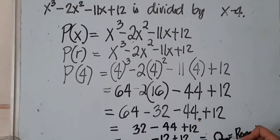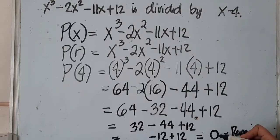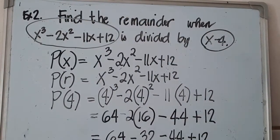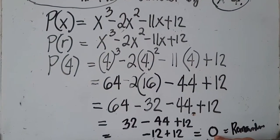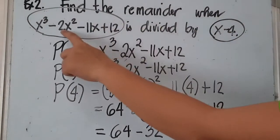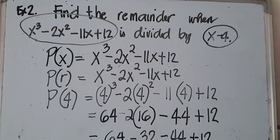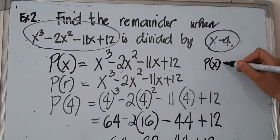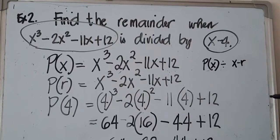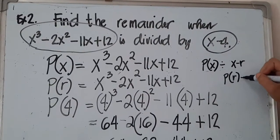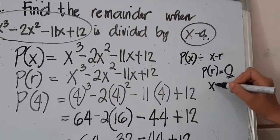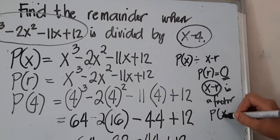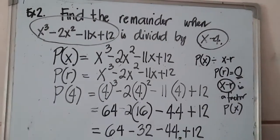Take note of this one. When the remainder is 0, automatically the divisor is a factor of the dividend. And repeat, when the remainder is equal to 0, the divisor is a factor of the dividend. Did you get that? Because in our factor theorem, factor theorem states that when P(x) is divided by our x minus r and our P(r) is equals to 0, automatically, our x minus r, the divisor, is a factor of our polynomial P(x). That is what our factor theorem states.